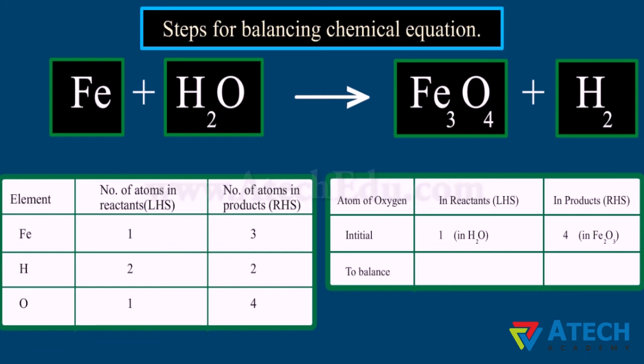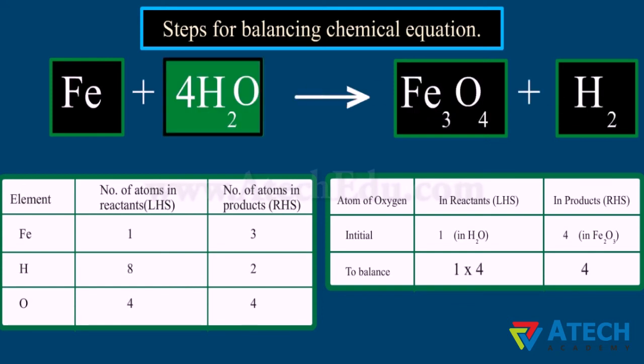For the element oxygen in Fe₃O₄, the number of oxygen atoms is four on the right hand side and one on the left hand side. To equalize the number of atoms, it must be remembered that we cannot alter the formulae of the compounds or elements involved. To balance oxygen atoms, we put the coefficient 4 in front of H₂O — written as 4H₂O, not as H₂O₄ or any other form.